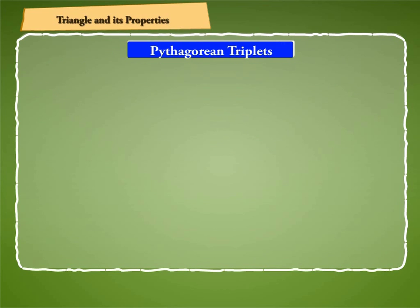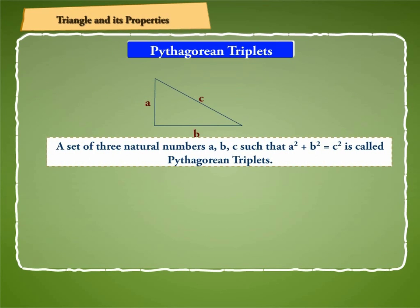Let us discuss about the Pythagorean triplets. A set of three natural numbers A, B, C, such that A square plus B square is equal to C square, is called Pythagorean triplet.